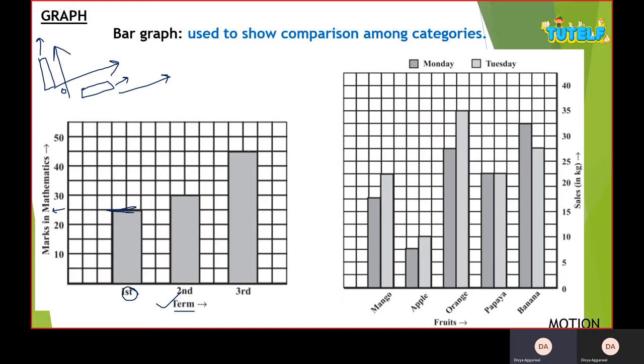In the second case we represent two values showing sales in kg for different fruits. For different days we have different sales for different fruits, so it represents three quantities. For Monday we have the dark graph on the left showing values for mangoes, apples, orange, papaya, and banana. Similarly for Tuesday we have different values.